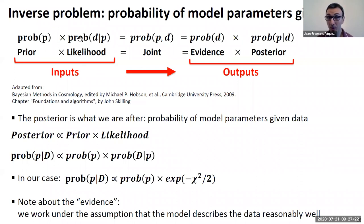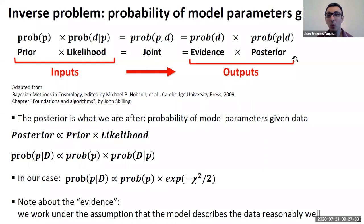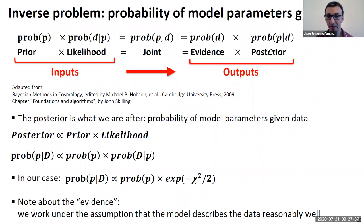These are our inputs: one comes from the model, and I'll come back to the prior in a few minutes. What we're interested in is the posterior, which is simply proportional to the prior times the likelihood.